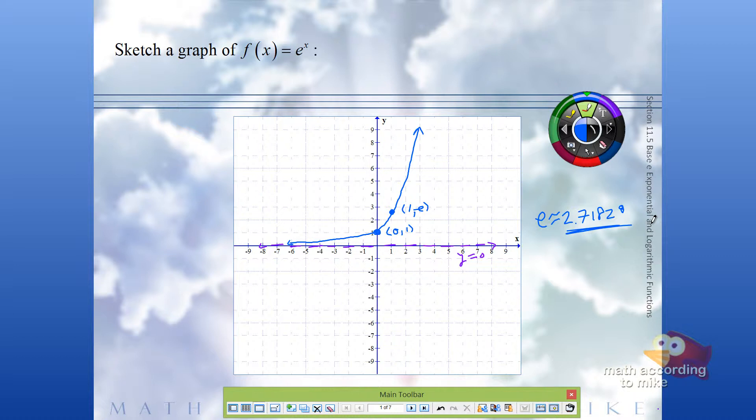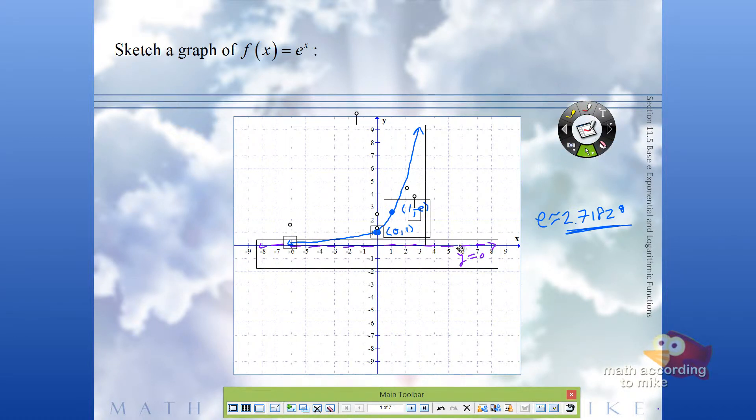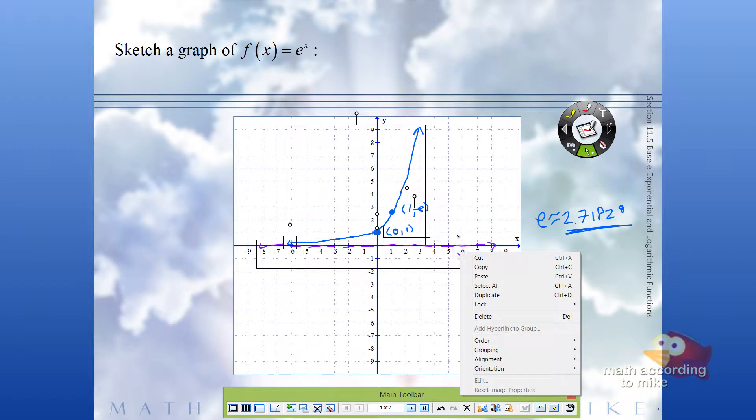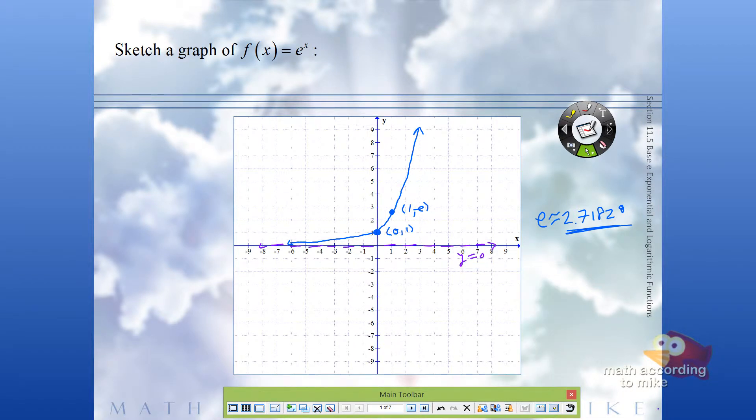So that's the graph of e to the x. Now what we're going to do is we're going to take this and do a transformation of it.